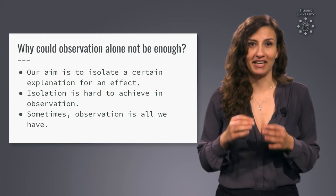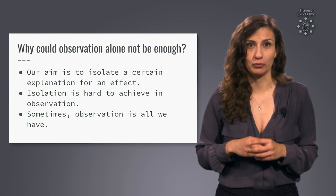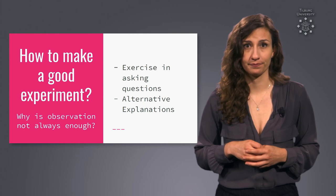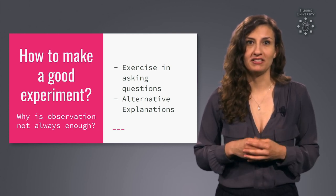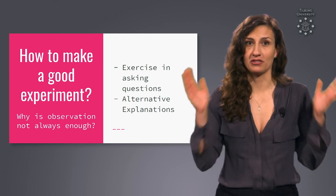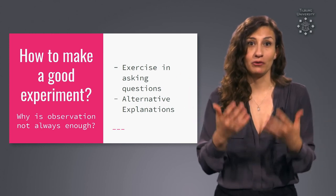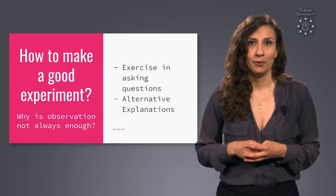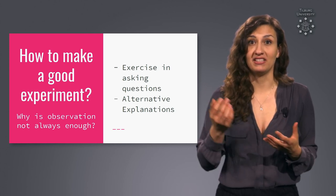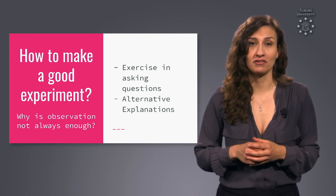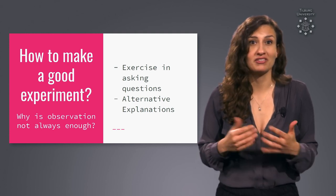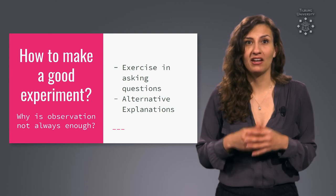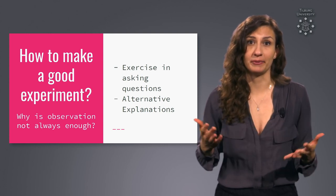So there are some limits to where you can do experiments and sometimes observation is all we have. In such cases we have to be extra careful about the inferences we make. In this part of the course we have exercised our ability to ask questions about our surroundings and to make speculations about the world. We have also practiced coming up with ideas how we could answer our questions using observation. At the same time though we have seen that observation alone is not always enough because it cannot guard us against alternative explanations.